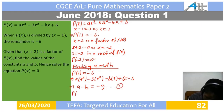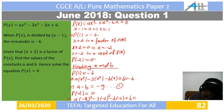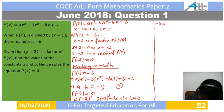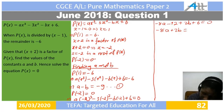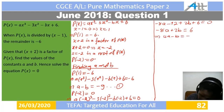Taking P of negative 2 equals 0: a times negative 2 cubed minus 3 times negative 2 squared minus b times negative 2 plus 6 equals 0. So we get negative 8a minus 12 plus 2b plus 6 equals 0. Therefore negative 8a plus 2b equals 6. Dividing by negative 2 gives 4a minus b equals negative 3. This is Equation 2.